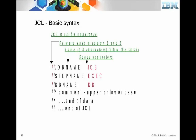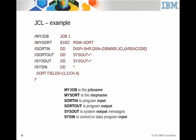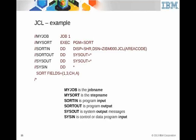Here's a real example that's in the labs for lab two. It executes program SORT. SORTIN has disposition SHARE — I want data set name YOURID.JCL with member AREACODE in parentheses, which is a partitioned data set. SORTOUT goes to the JES spool. SYSOUT goes to the JES spool. SYSIN DD asterisk means whatever follows the program will understand — in this case it's a control statement telling sort to sort fields starting at position one for a length of three characters, ascending.